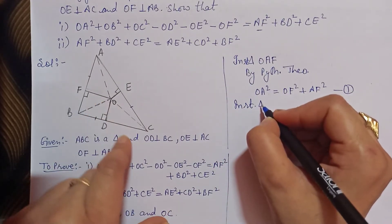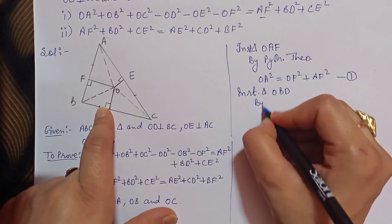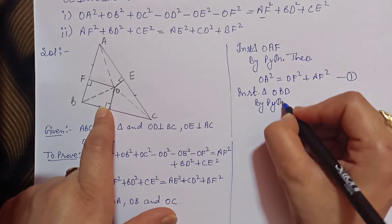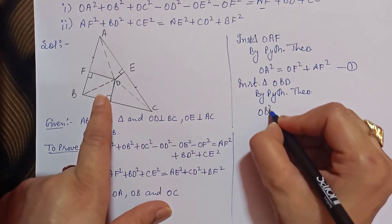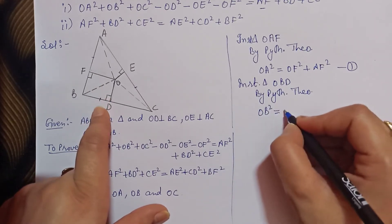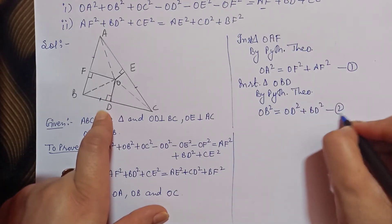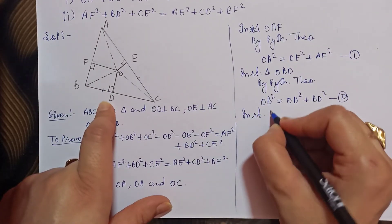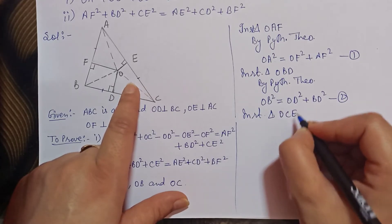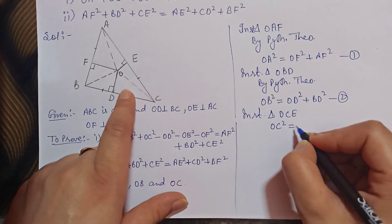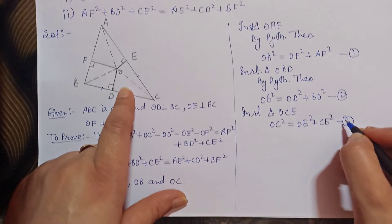In right triangle OBD، by Pythagoras theorem: OB² = OD² + BD². اس کو equation 2 لے لیں گے۔ In right triangle OCE: OC² = OE² + CE². یہ آ گیا ہمارے پاس third equation۔